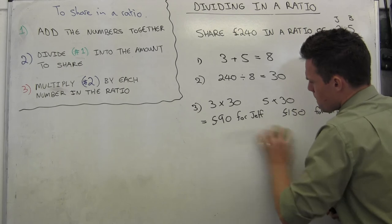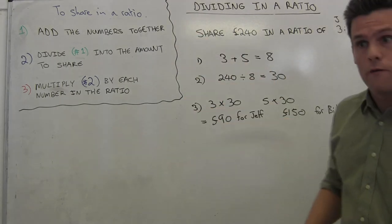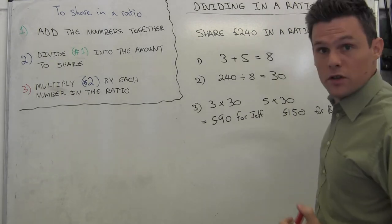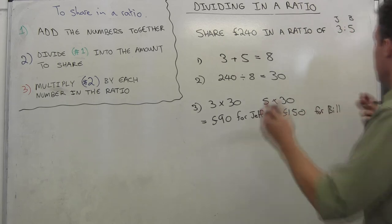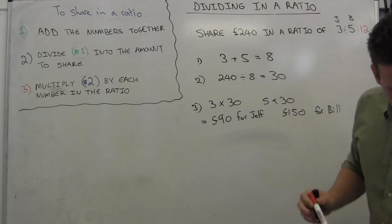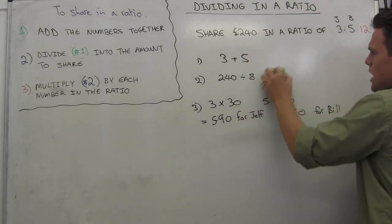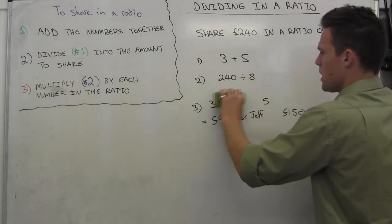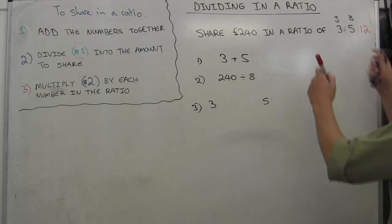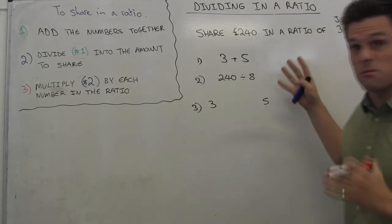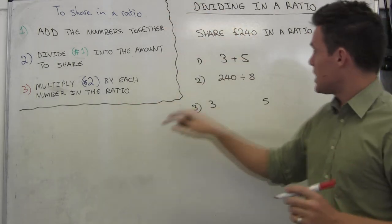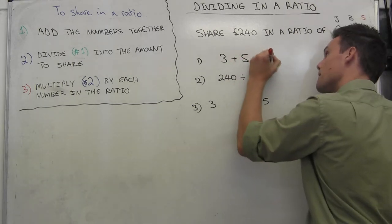So this method here will work for every version of this question you can get. So let's say instead of 3 to 5, it was 3 to 5 to 12. Obviously then what's going to happen is this answer is going to change, and this answer is going to change, and we're going to be multiplying these by a different amount. So let's say we had Jeff and Bill and Susan, and Susan for some reason gets far more money than the other two. So all we do is we follow this same process again. It's going to be 3 plus 5 and this time plus 12.